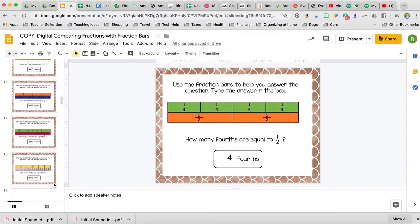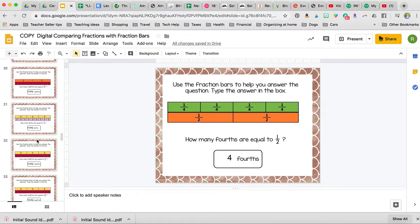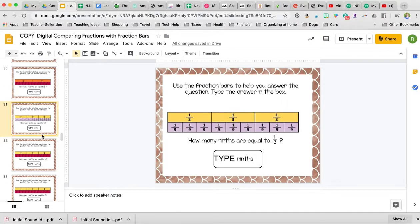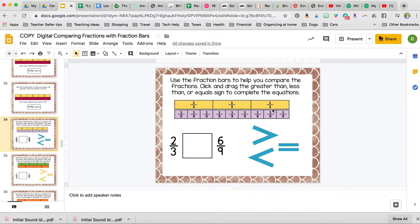So then after students practice those, there are quite a few of those types of questions. Let me just show you a few different examples. We've got comparing ninths to thirds. We have using fraction bars to help you compare the fractions. They have to complete this greater than, less than, or equal equation using the fraction bars to help them, and these are all clickable, which is where the undo button comes in handy.